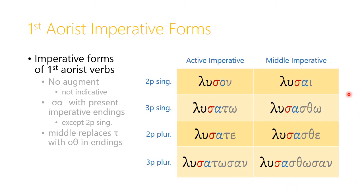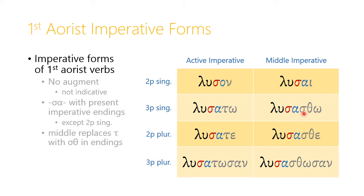For the middle imperative, we had lusai, then lusasthō, lusasthe for the second person plural, and lusasthōsan. You can see the relationship between the active and middle forms: the second person singular is irregular, but otherwise the -atō becomes -asthō, the -ate becomes -asthe — the tau becomes sigma-theta throughout. If you remember that pattern, the middle imperative forms are easy to recall.